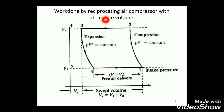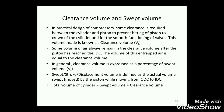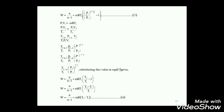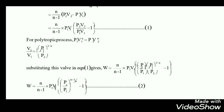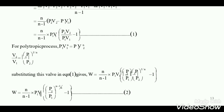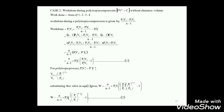This is the process 1, 2, 3, 4, 1. Then you can calculate the work done by reciprocating air compressor without clearance. Then you can calculate the work done during the polytropic process. The work done is equal to n by n minus 1 into p1, and then p2 by p1 the whole raised to n minus 1 by n, the whole minus 1. Then you can calculate the work done by the polytropic compression process without clearance.